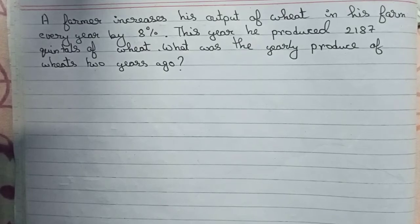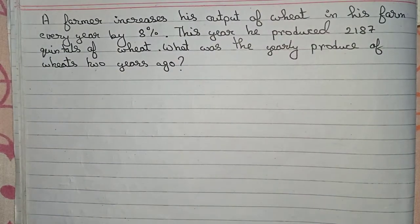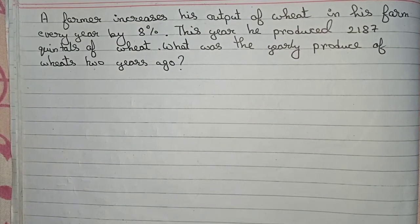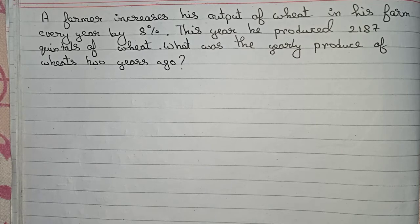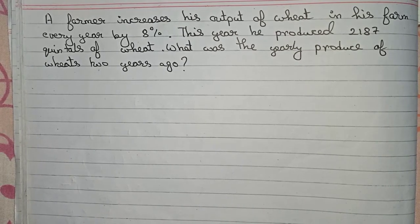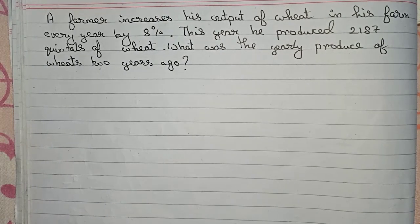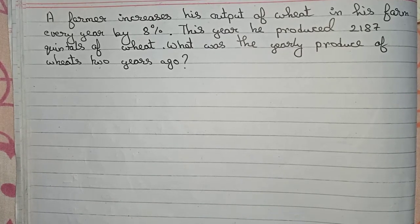Hello guys, welcome to this video. In this video, our question is: A farmer increases his output of wheat in his farm every year by 8 percent. This year he produces 2187 quintals of wheat. What was the yearly produce of wheat two years ago? So in this question, we are provided with the present production and we have to find out the production two years ago.